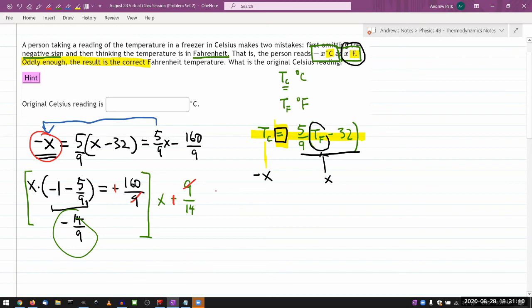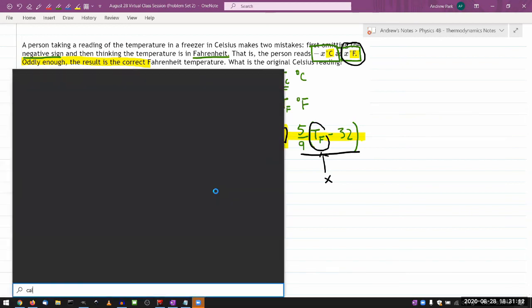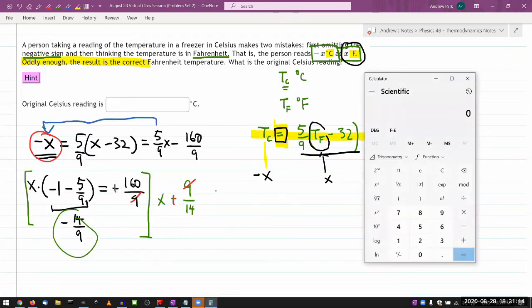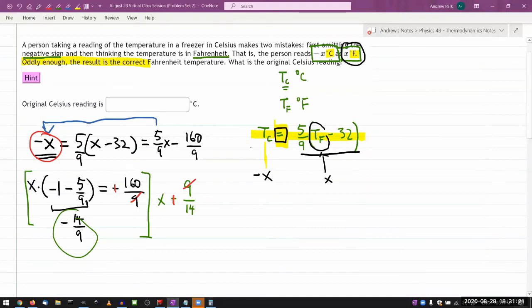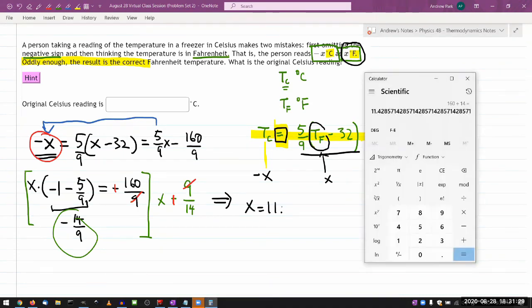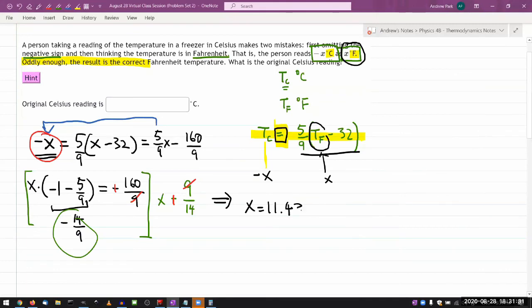And the answer is 160 over 14. I don't think that simplifies. So let me just do that in a calculator. So that I'm not wasting time. 160 over 14, 11.43. So my final answer here is X is equal to 11.43. And the reading here is minus 11.43.